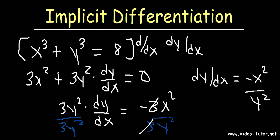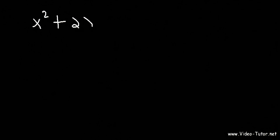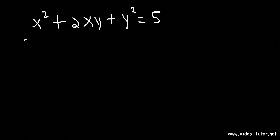So that's how you can do it. But now let's try another example. Let's say if we have this function: x squared plus 2xy plus y squared equals 5. And we want to find dy/dx. Now for the 2xy part, we have x and y combined, and whenever you see that, you need to use the product rule.